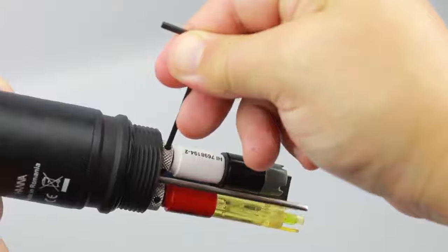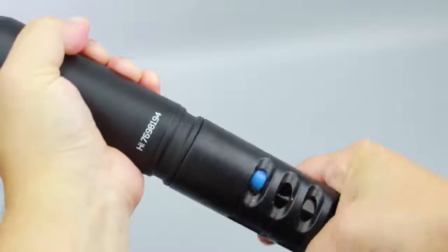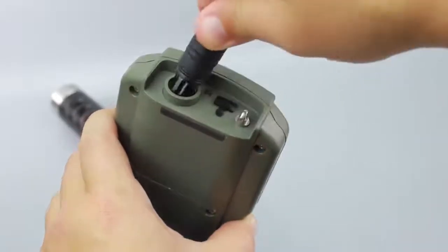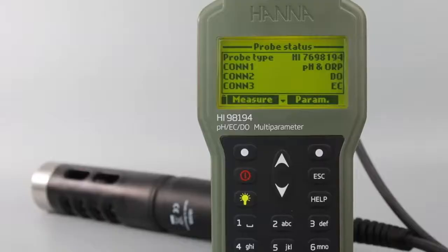Once complete, screw the protective shield onto the probe body. This will help protect the sensors. With the meter off, connect the probe to the input on the top of the meter. Turning the meter on, it will automatically recognize the probe and the installed sensors and identify them on the probe status screen.